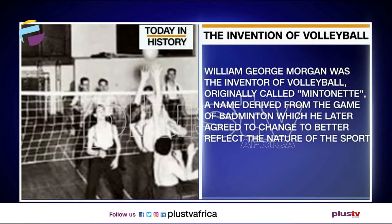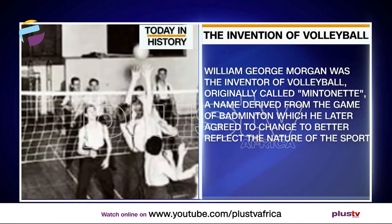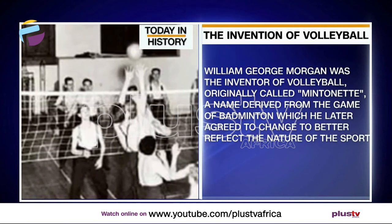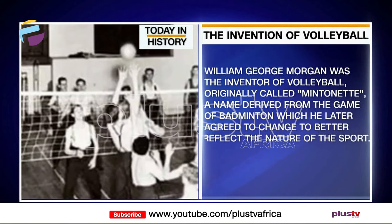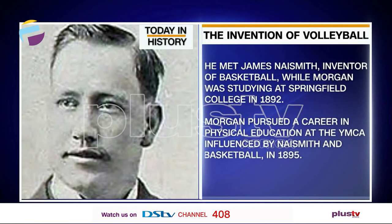Volleyball was a game that basically mixed elements of basketball, baseball, handball, and tennis. Morgan continued to tweak the game and eventually settled on six players on each side, separated by a net.